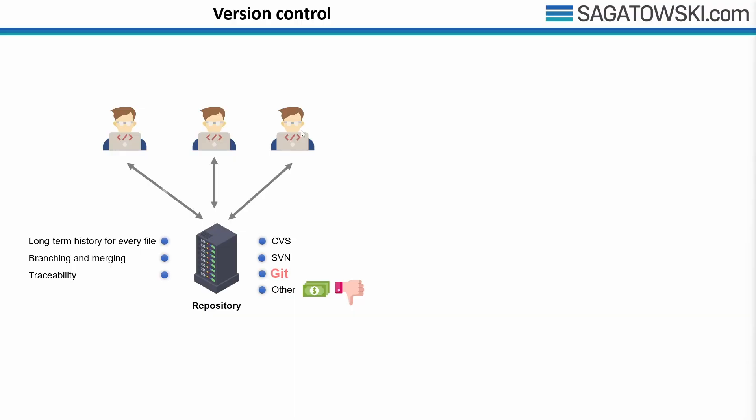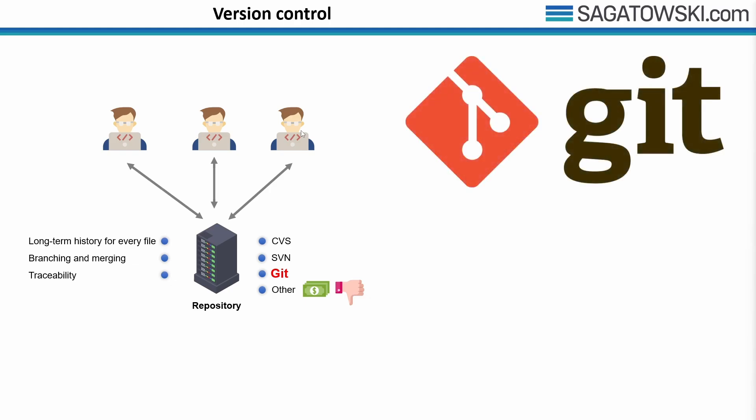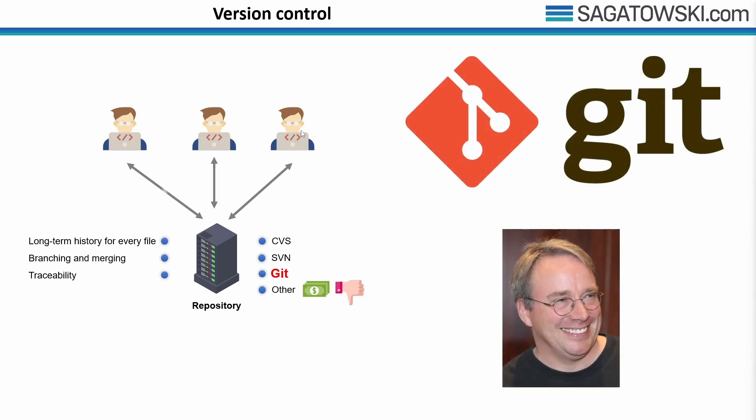For the remainder of this tutorial we will be working with Git. Git was created by Linus Torvalds, the creator of Linux, as he thought all current version control systems were lacking in some aspect. Like it wasn't enough to create an operating system kernel running on the vast majority of servers and smartphones — he also created the world's most popular version control system. It's impossible not to be fascinated by his selfless contributions to the world.